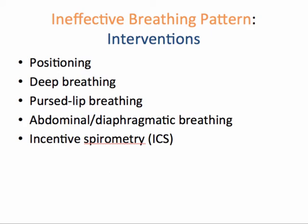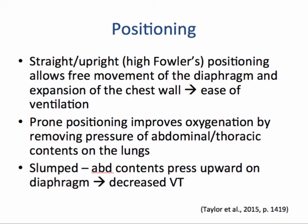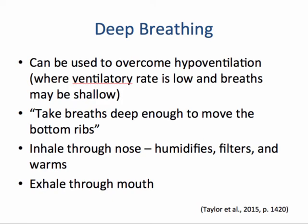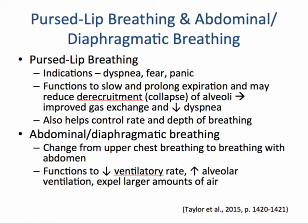A straight and upright position, also known as high Fowler's positioning, allows free movement of the diaphragm and expansion of the chest wall, resulting in ease of ventilation. Prone positioning improves oxygenation by removing the pressure of abdominal or thoracic contents on the lungs. Whenever an individual is in a slumped posture, abdominal contents press upward on the diaphragm, resulting in a decrease in tidal volume. Deep breathing can be used to overcome hypoventilation — instruct the patient to take deep breaths enough to move the bottom ribs, inhaling through the nose and exhaling through the mouth. Pursed lip breathing functions to slow and prolong expiration, potentially reduce alveolar collapse, improve gas exchange, and decrease dyspnea.